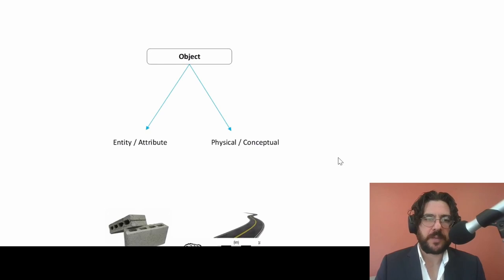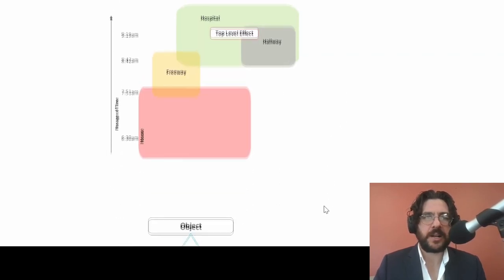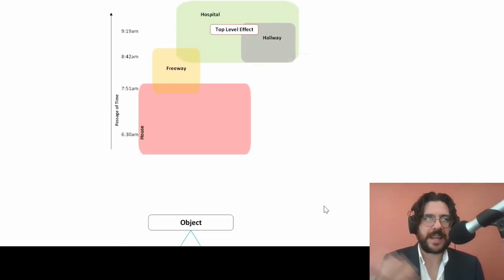We talked about an object being an entity and an attribute. We talked about how it can be physical or conceptual, and then I gave you some examples. This is all leading on from us starting to containerize space and put a timestamp on where activities are happening and where things are starting to unfold.